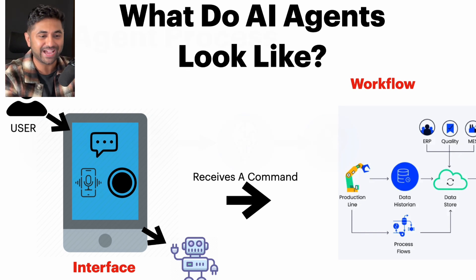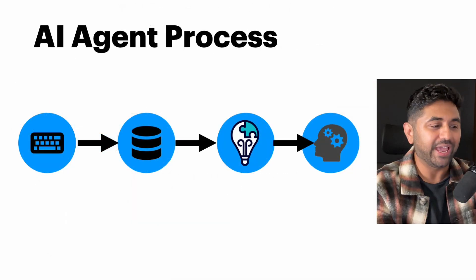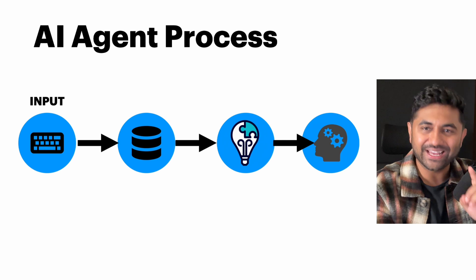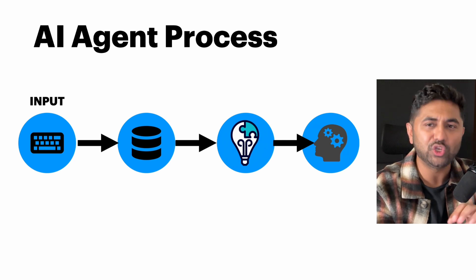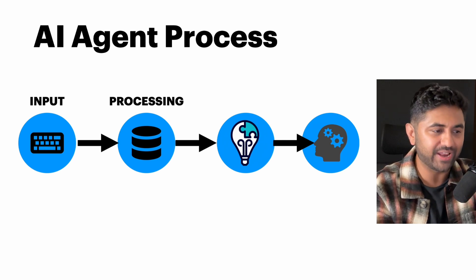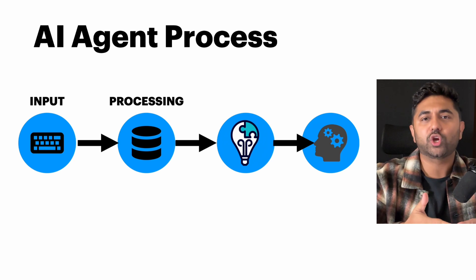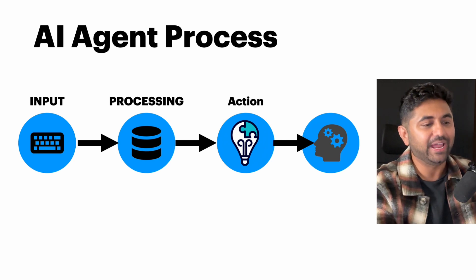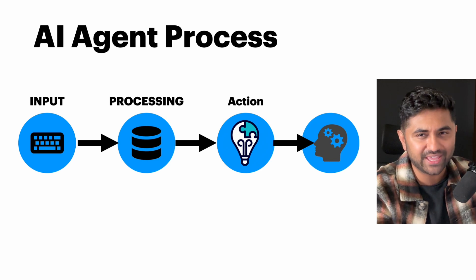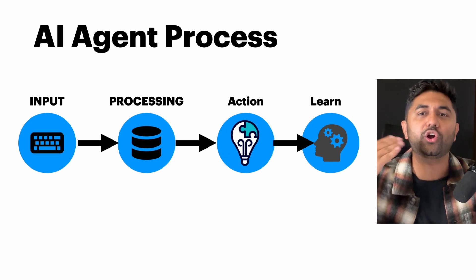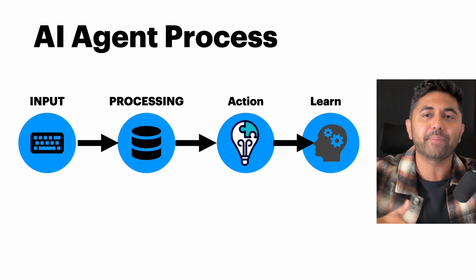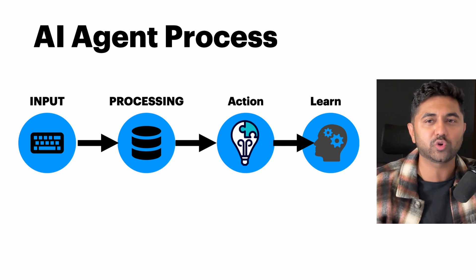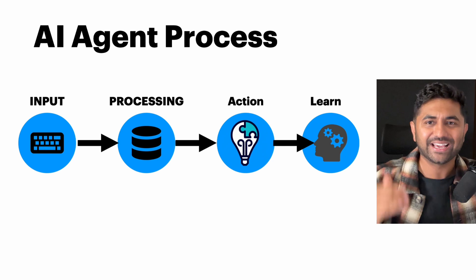An AI agent works in four steps. Number one: it gets information input — you tell it what you need. Number two: it processes that input, going through all the data and information it has. Number three: it takes action. Number four — and this is the best part — it learns. The more you use it, the better it gets.